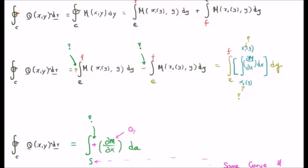So we see that the closed line integral of q.dr going anticlockwise is equivalent to the surface integral of del m del x, which is equivalent to q sub y del x.